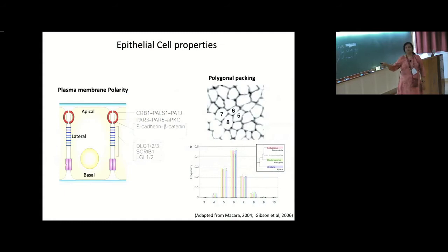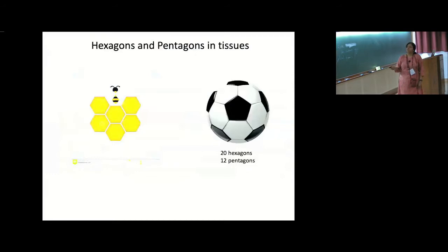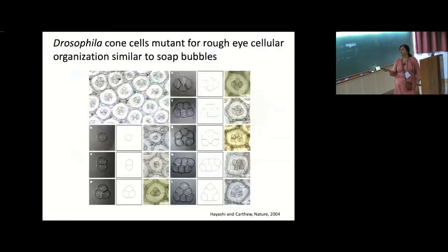Looking at the distribution of cell shapes across many different organisms, we see a concentration of hexagons, followed by five-sided and seven-sided structures, which comes about in tissues across many different organisms. When we look at a beehive, typically they are all hexagon-dominated; a beehive does not have stress or pulling forces. Whereas to make a sphere — like in a football — that is where the concentration of hexagons and pentagons is needed. Also interesting is comparing cell shapes to soap bubbles.